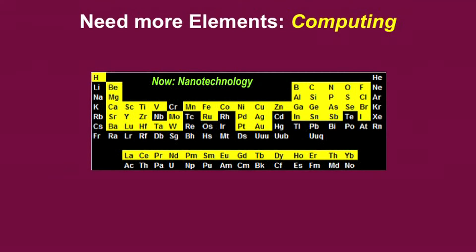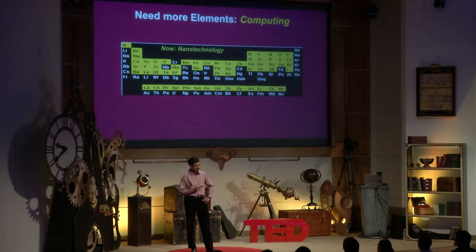Looking at the computer industry, in the 1980s we used about a dozen elements from the periodic table — those were used more widely than others. But fast forward to today, we are using about 60 of these elements for technology, essentially anything that is not toxic or radioactive.